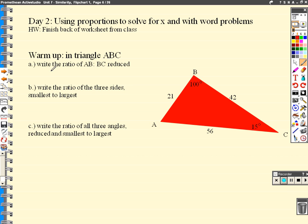So AB is 21 and BC is 42, and I want to reduce that. So 21 and 42, what do they have in common? Well, 21 goes into both of them. It goes into itself once, and 42 twice. So the ratio is 1 to 2.